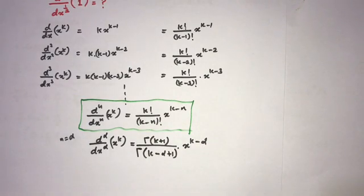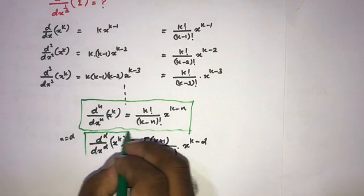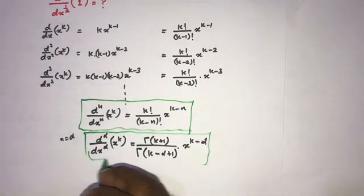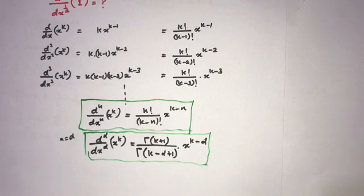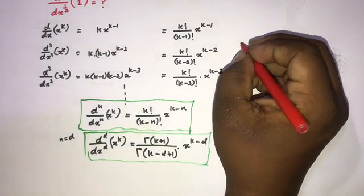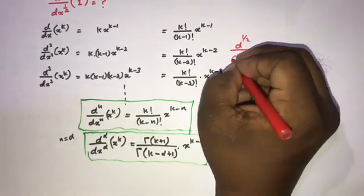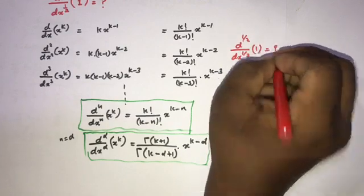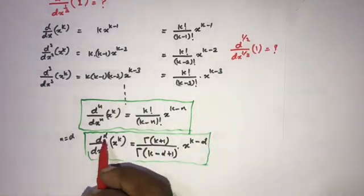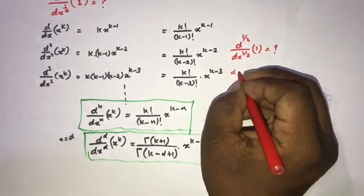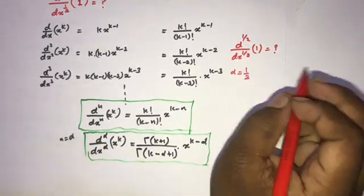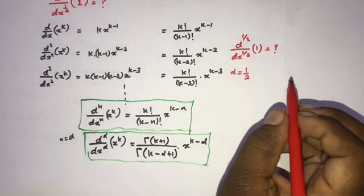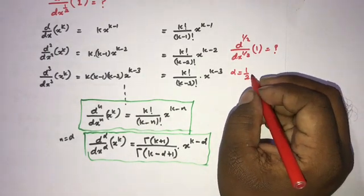Alpha can be any fractional value. Now we have to find the half derivative of 1: d to the 1/2 over dx to the 1/2 of 1. We know clearly that alpha is equal to 1/2.